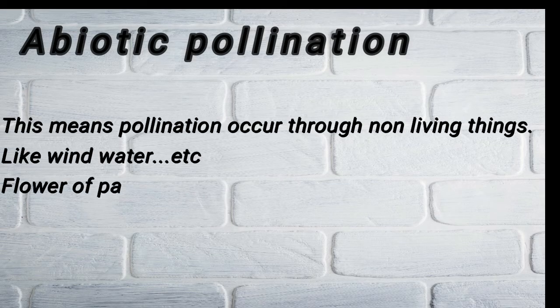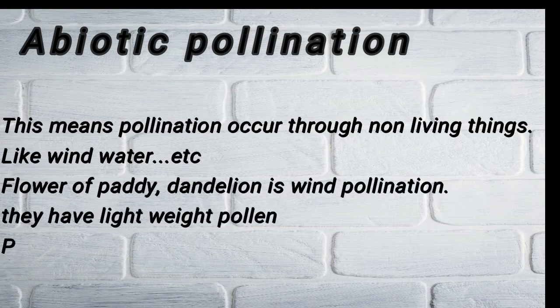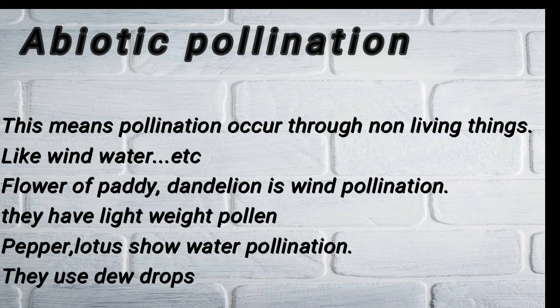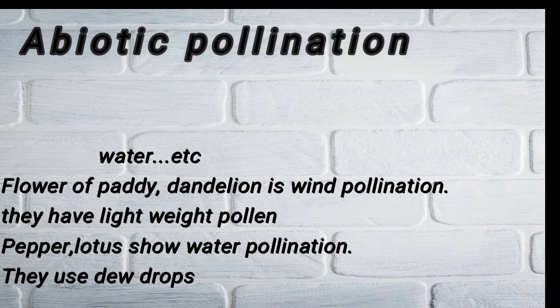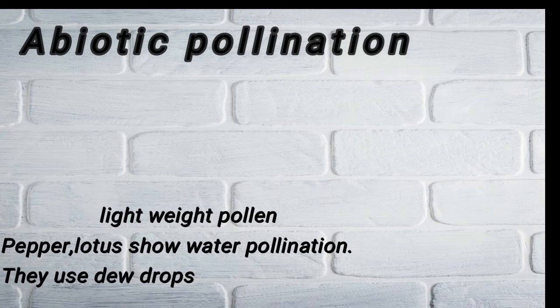Abiotic pollination means pollination occurs through non-living things like water and wind. Flowers of paddy and dandelion are examples of wind pollination and they have light pollen. Pepper and lotus show water pollination, meaning they use dew drops and water to pollinate.